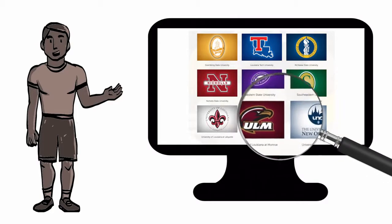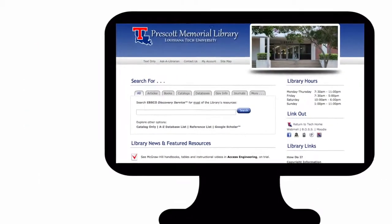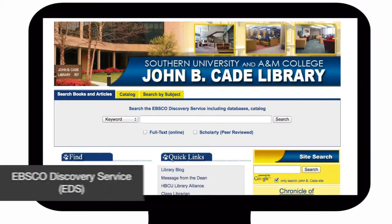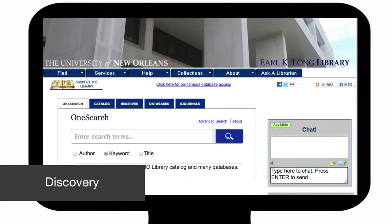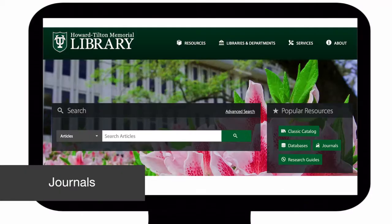Depending on your library, you might see a search box or other options labeled as EBSCO Discovery Service, EDS, Discovery, Catalog, Journals, Articles, Databases, and others.